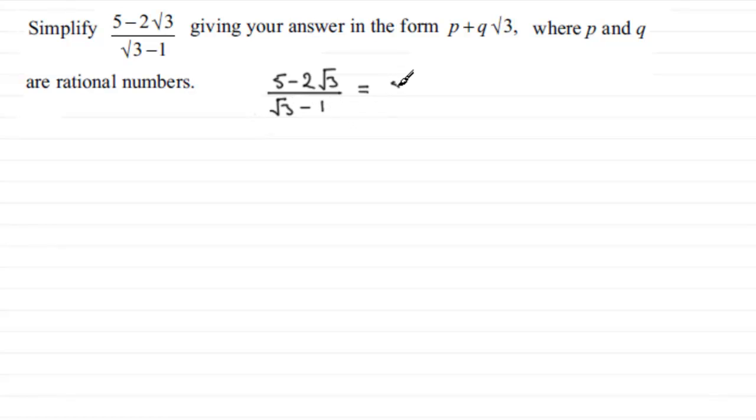So what I do is I take my fraction again, 5 minus 2 root 3, all divided by root 3 minus 1, and I essentially multiply this by 1. And you might be thinking, well, what is that going to do? I'll just keep it the same. But it's how we multiply it by 1. And what we do is we take these two terms here, but we switch the sign in between them.